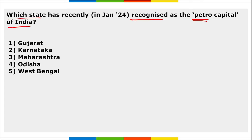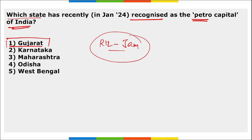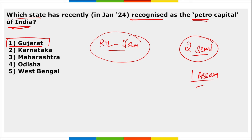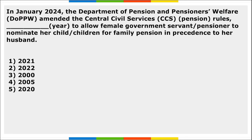Next: which state has recently been recognized as the Petro Capital of India? It is Gujarat. The RIL Jamnagar Refinery — Reliance Industries Limited's Jamnagar Refinery Complex — is the largest and most complex single-site refinery in the world. Remember: two semiconductor manufacturing plants will be set up in Gujarat, and one will be in Assam, set up with the help of Tata.